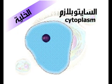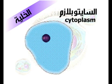السايتوبلازم. هو جزء المادة الحية للخلية الذي يقع خارج النواة، ويحيط به من الخارج الغشاء البلازمي. يشكل الماء 80% من مكوناته، وهو يحتوي على العضايات الخلوية.